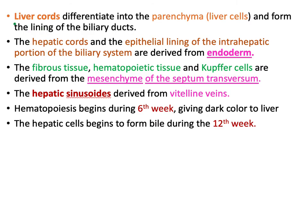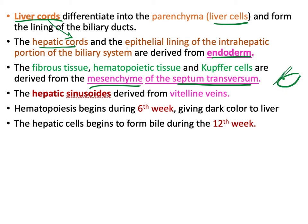The liver cords differentiate into liver cells and originate from endoderm, which also forms the epithelial lining of the intrahepatic portion of the biliary system. The fibrous tissue, hematopoietic tissue, and Kupffer cells are derived from mesenchyme of the septum transversum, since the hepatic diverticulum penetrates and takes mesenchymal cells from it.